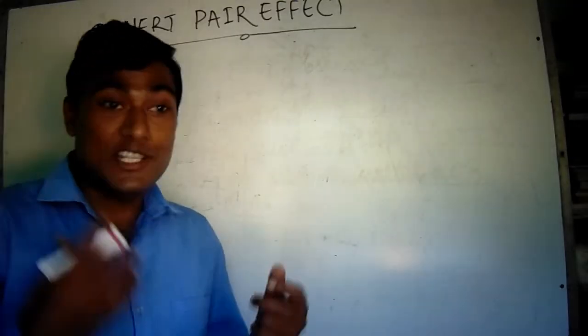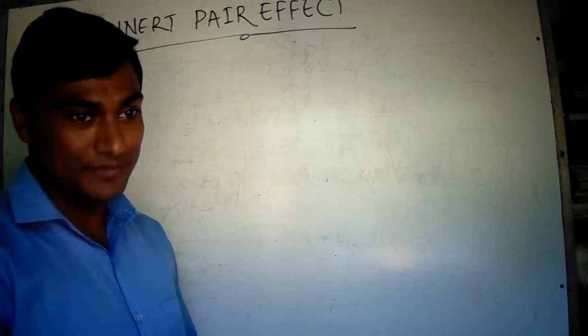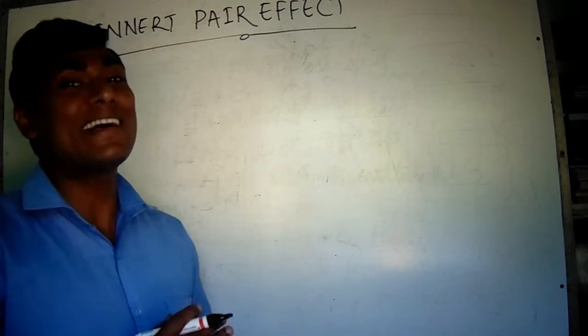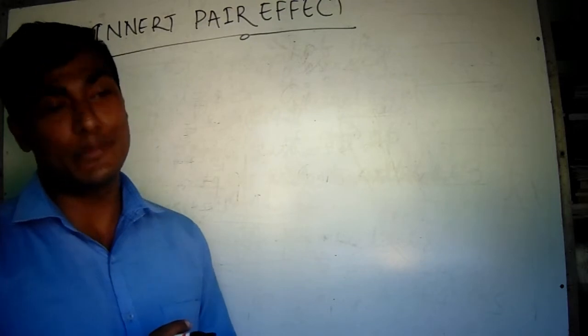Thallium has the atomic number of 81. It is the second heaviest element of group 13 elements.